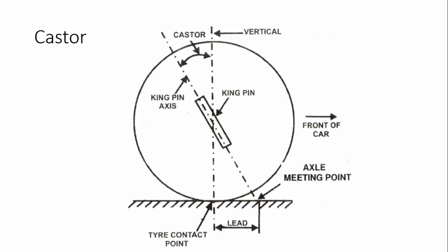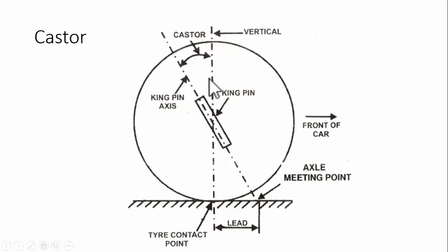The first one is caster angle. The caster angle is the angle made between the steering axis and the vertical axis. This is the vertical line and this is the steering axis. This has to be seen from the side — this is the side view of a wheel. The angle made between the kingpin axis, that is the steering axis, and the vertical is called the caster angle.